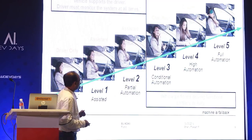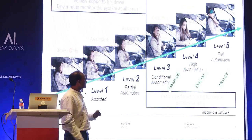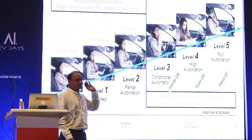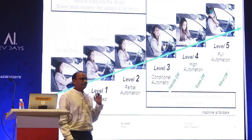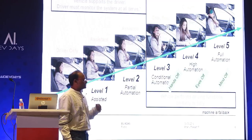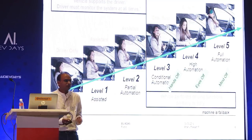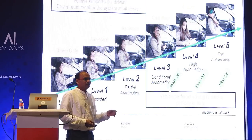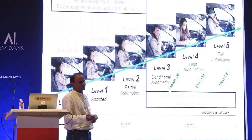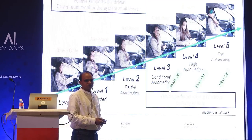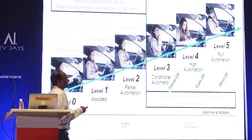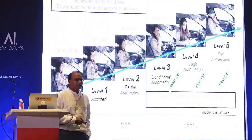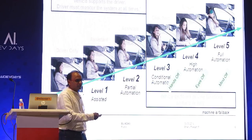To summarize: at level three you can keep your hands off and the vehicle drives by itself. Level four is eyes off — you can do whatever you want, check your mobile or read books. And finally, level five is mind off — you can sleep and the vehicle takes care of going from one destination to another.